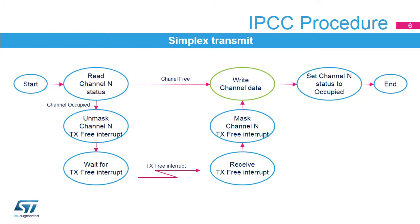The simplex procedure allows the transfer of a message from a sending side to a receiving side via a dedicated channel. To transmit a message using the simplex procedure, the channel status flag is checked. When the channel status flag indicates channel-occupied or flow-off, due to the receiving side not having freed the channel data buffer from a previous message, the channel-free interrupt is unmasked. Once the channel is freed by the receiving side, a channel-free interrupt, or flow-on, is generated.